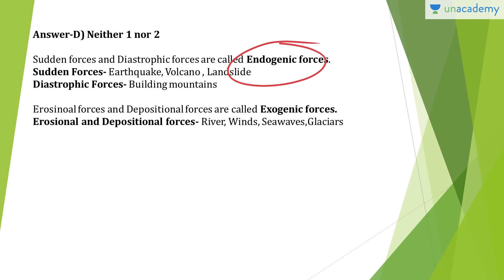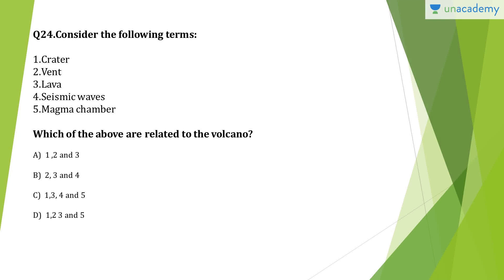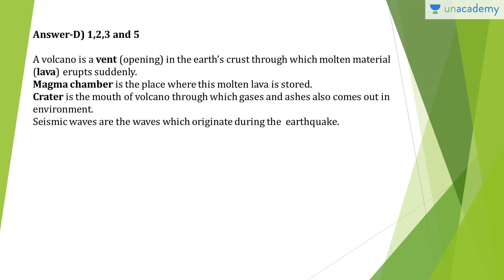Question 27: An earthquake is measured with a machine called the Richter scale — wrong. An earthquake is measured by a seismograph and the magnitude is measured on the Richter scale. Answer is D, neither one nor two — both statements are reversed. On the Richter scale, an earthquake of 2.0 or less can barely be felt. An earthquake over 5 can cause damage. A magnitude of 6 or higher is considered very strong, and 7 is classified as a major earthquake.